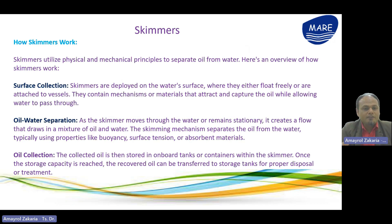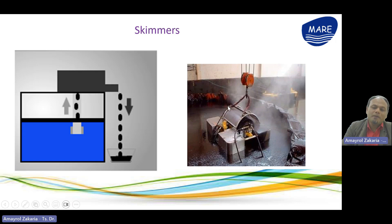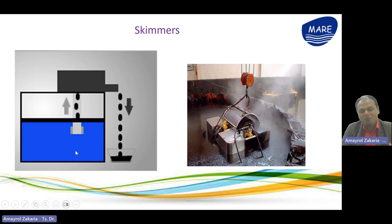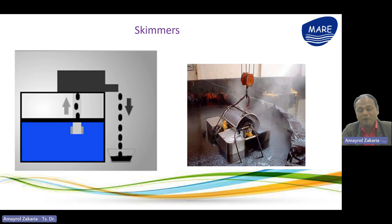How do skimmers work? Surface collection, oil-water separation, and oil collection. This is how the skimmer looks like here. It is a kind of mechanical device — the equipment will absorb all the oil spill on the surface of the water and pour it into another suitable place for oil spill removal.